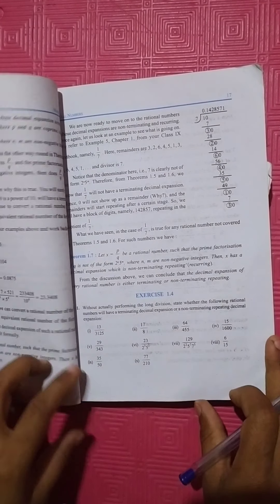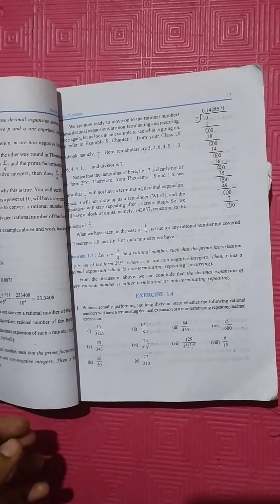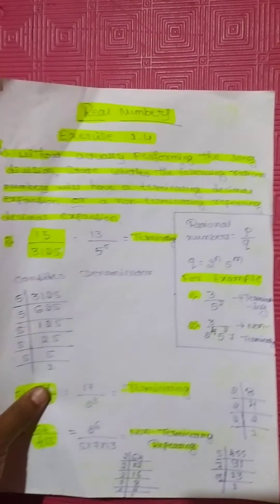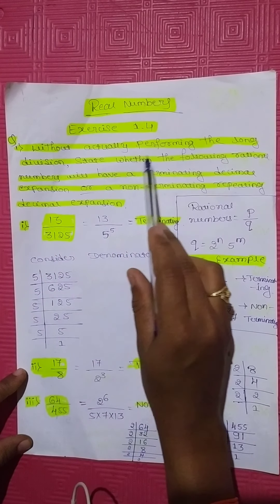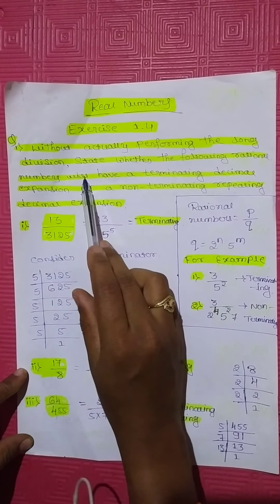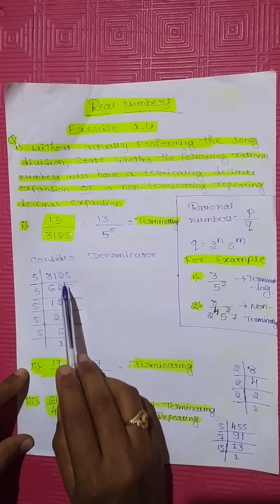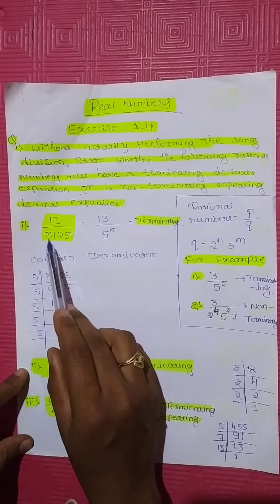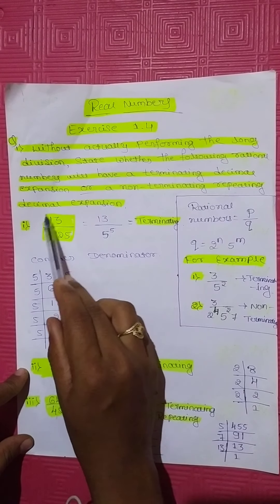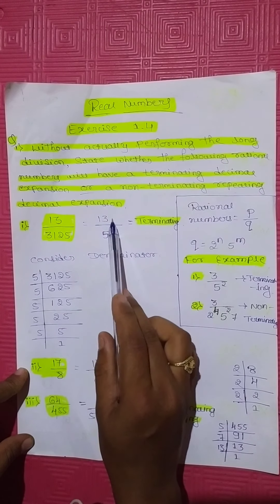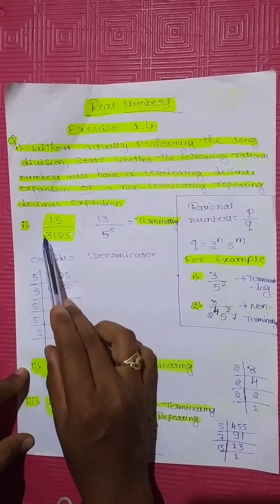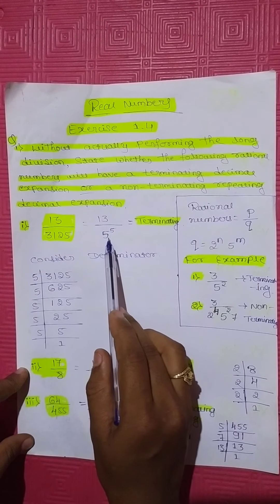Now I will go to Exercise 1.4. Without actually performing the long division, state whether the following rational numbers will have a terminating decimal expansion or non-terminating repeating decimal expansion. First question: 13 divided by 3125. Here 13 itself is a prime number, so keep it as it is. Now convert the denominator into prime factorization.